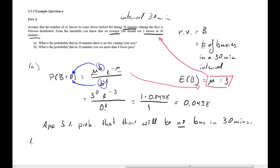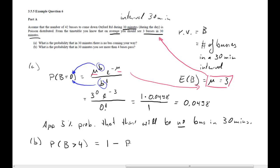Now part B: what is the probability that in 30 minutes we see more than 4 buses? That is P(B > 4), which equals 1 minus the probability of getting at most 3 buses — or more precisely, 1 minus P(B ≤ 4).